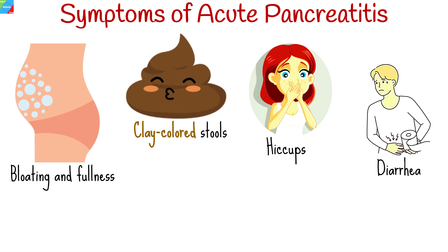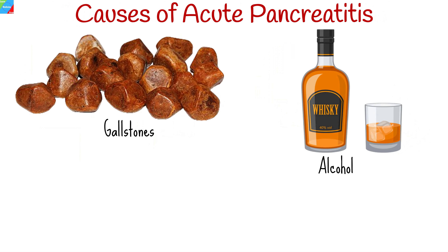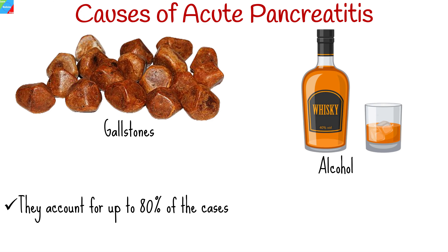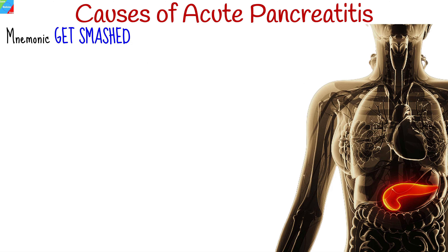The most common causes are gallstones and alcohol, accounting for up to 80% of cases. The causes of acute pancreatitis can easily be remembered by the mnemonic GET SMASHED, where G stands for gallstones, which blocks the bile duct or where the bile duct and pancreatic duct open into the duodenum, therefore disrupting the flow of pancreatic enzymes which eventually triggers pancreatitis.